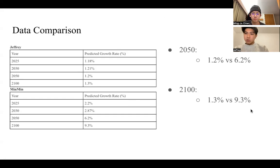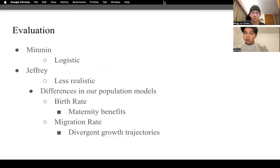By the year 2100, the disparity becomes more pronounced, with my growth rate at 1.3% and Minmin's at 9.3%. This suggests that Minmin's population model, with its logistic exponential prediction, is more likely to accurately represent real-world scenarios compared to my linear model, which may be less reflective of population dynamics.